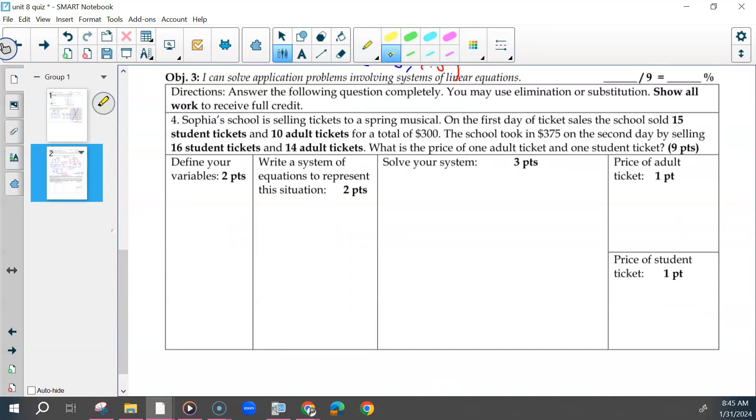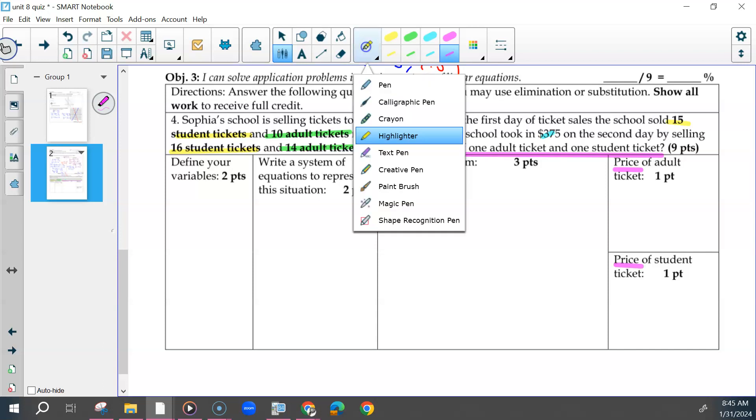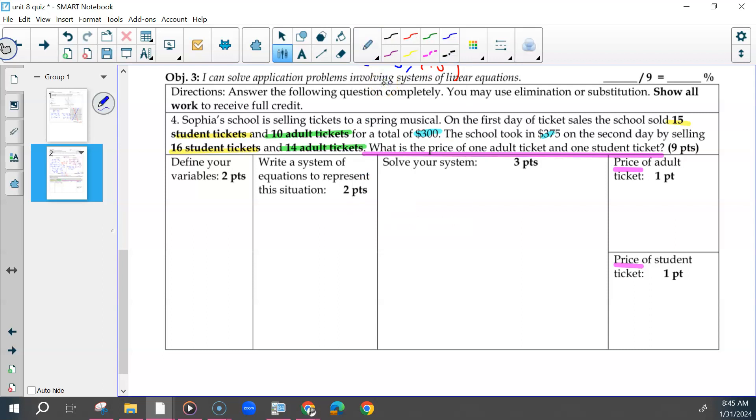And your word problem, some of the important things were already bolded: the 15 student tickets, the 16 student tickets, the 10 adult tickets, the 14 adult tickets, and then the totals of 300 and 375. The question, what is the price? When you define your variable, it should be about price. It also says price here, so it should have been number of. You could have labeled your two variables whatever you wanted. I'm going to use A and S.